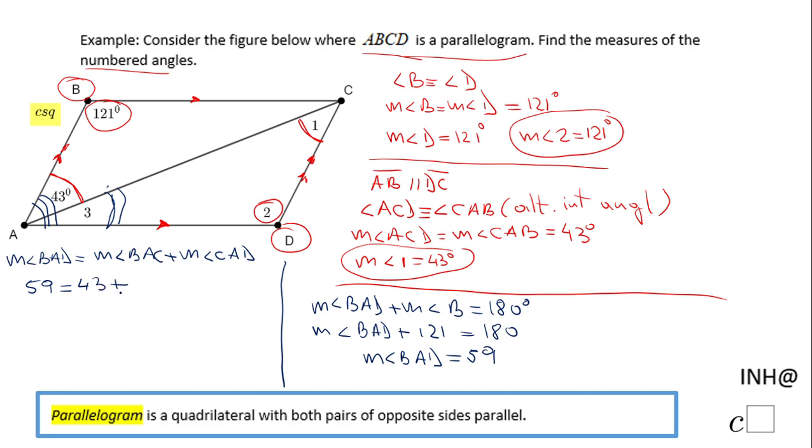So now we have BAD, which is 59, equals BAC, which is 43, and CAD, that is the angle 3 that we need to find out. So in order to find angle 3, we just need to subtract 43 on both sides.